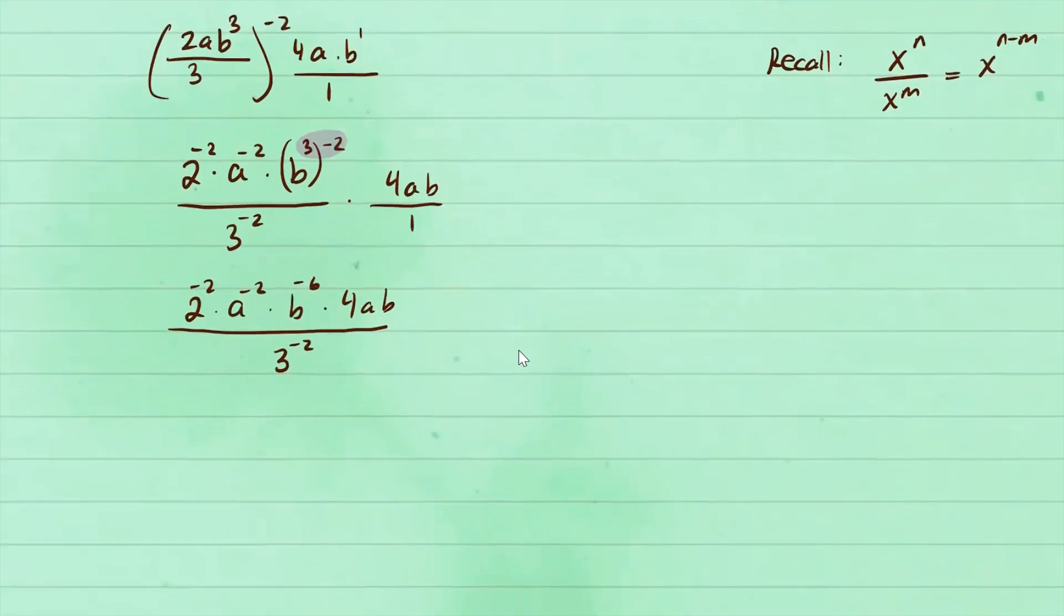Now here we're going to be recalling another laws. So if you have, let's say, x to the negative n power, this can be written as 1 over x to the positive exponent on the bottom.